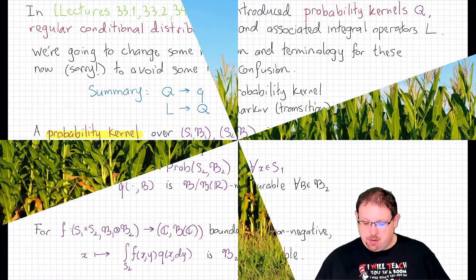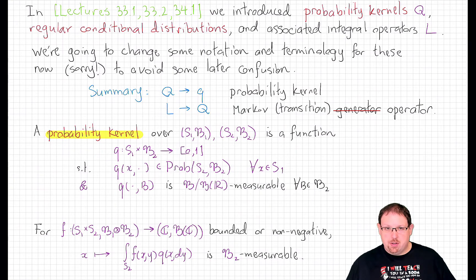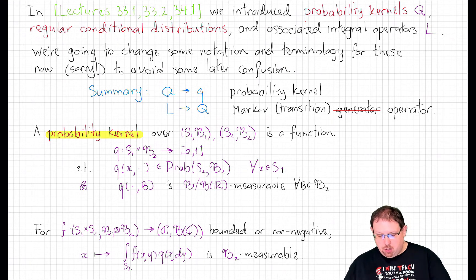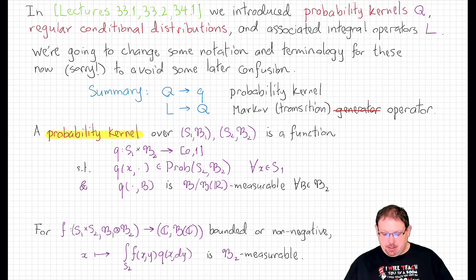Probability kernels and regular conditional distributions are going to play an important role in what we do for the next many lectures. I'm going to take this opportunity to briefly review their important properties right now. I'm also going to change the notation we use for them. Earlier we referred to probability kernels with capital Q and the associated integral operators with capital L. We're now going to use lowercase q to denote a probability kernel and capital Q to denote the integral operator associated to it.